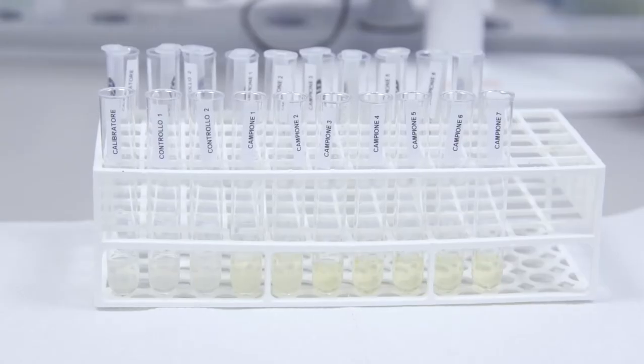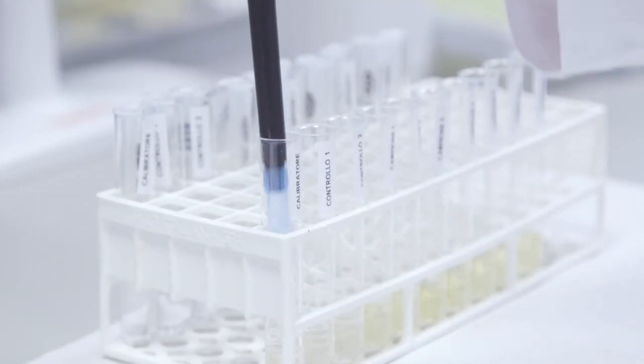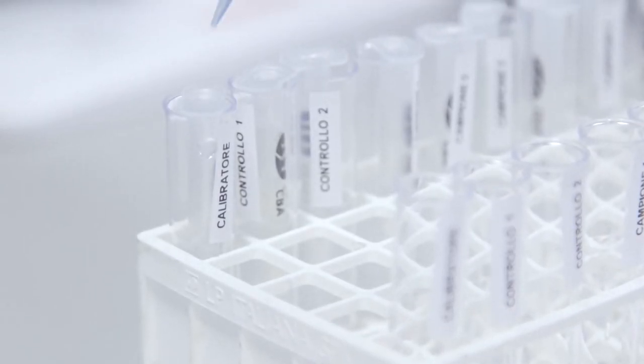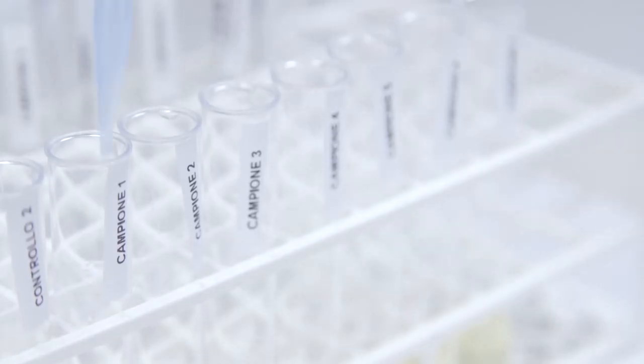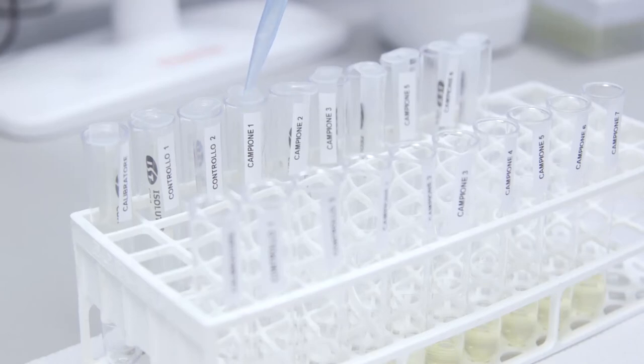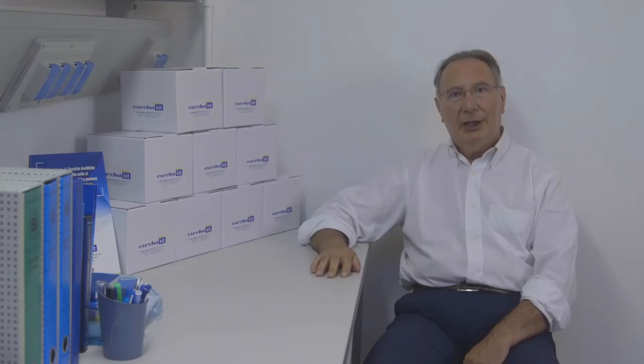Now we add to the SPE column already conditioned, in two consecutive aliquots of one milliliter, the calibrator, the samples, and the controls prepared in the previous step. Let it slowly percolate to the flow of about one milliliter per minute. In this passage the liquid must pass through the column very slowly to make the molecules of interest interact with the resin and remain connected.